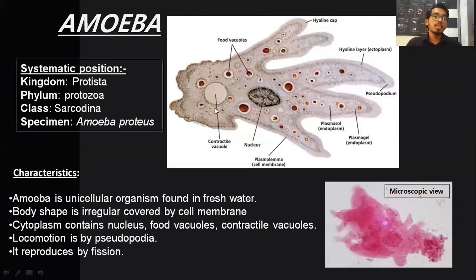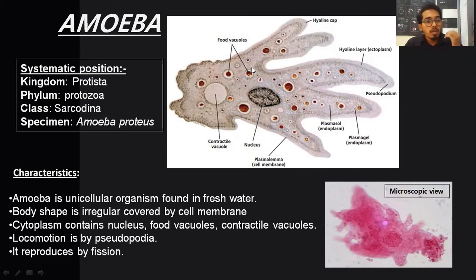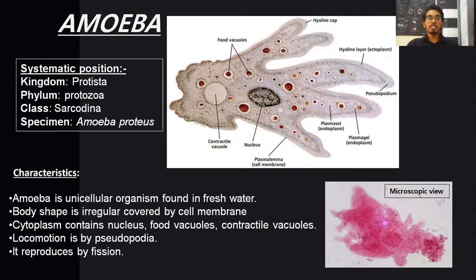Locomotion in amoeba: it starts producing false feet — the cytoplasmic content starts protruding forward and in this way it produces a false foot, hence the term pseudopodia. So locomotion is by pseudopodia. It reproduces by fission — simple binary fission mechanism. This completes amoeba.